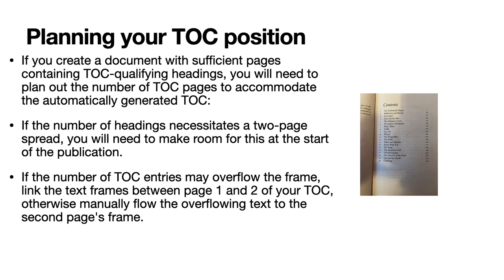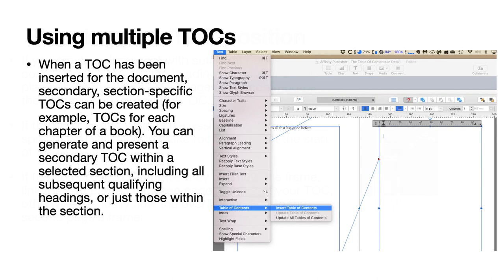If you create a document with sufficient pages containing TOC qualifying headings, you'll need to plan out the number of TOC pages to accommodate the automatically generated TOC. If the number of headings necessitates a two-page spread, or even three, you'll need to make room at the start of the publication. If the number of TOC entries may overflow the frame, link the text frames between pages one and two of your TOC. Otherwise, manually flow the overflowing text to the second page's frame. If you're using multiple TOCs, when a TOC has been inserted for the document, secondary section-specific TOCs can be created — for example, TOCs for each chapter of a book. You can generate a secondary TOC within a selected section, including all subsequent qualifying headings or just those within the section.